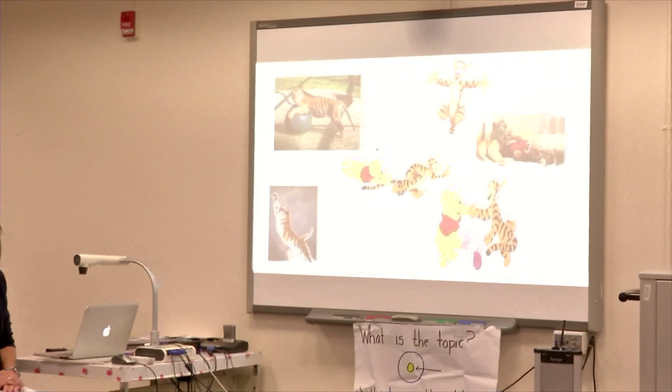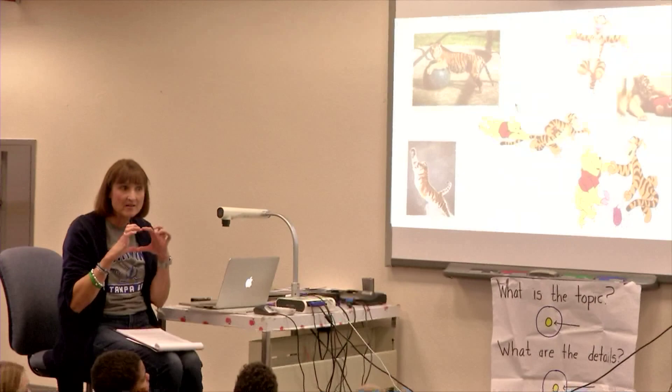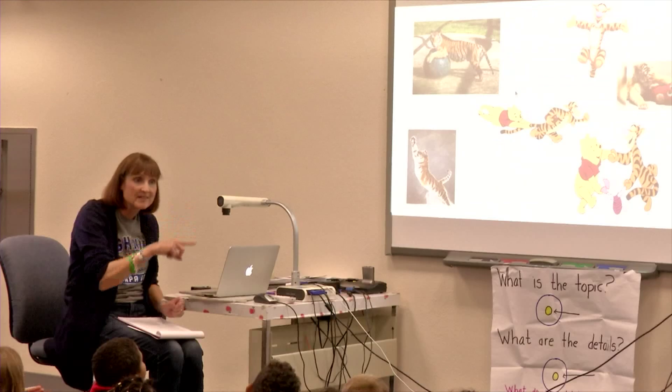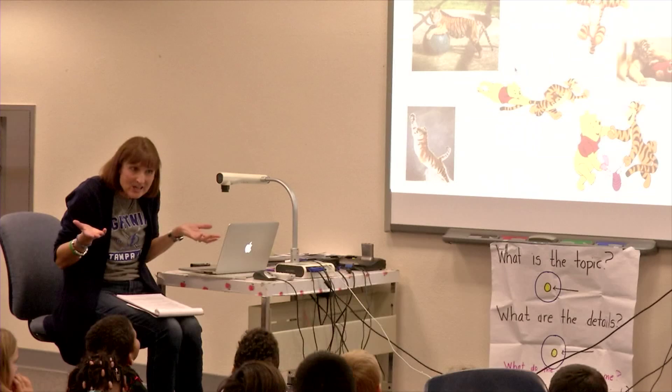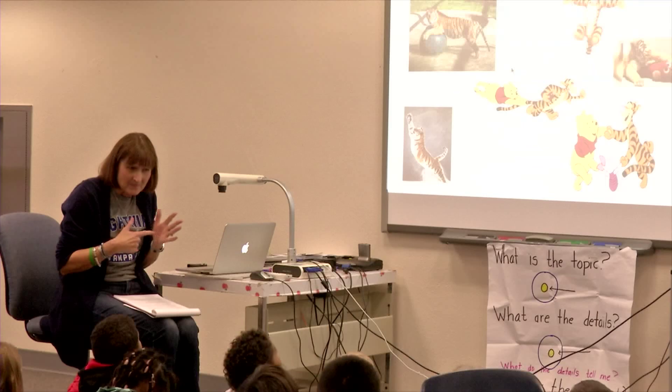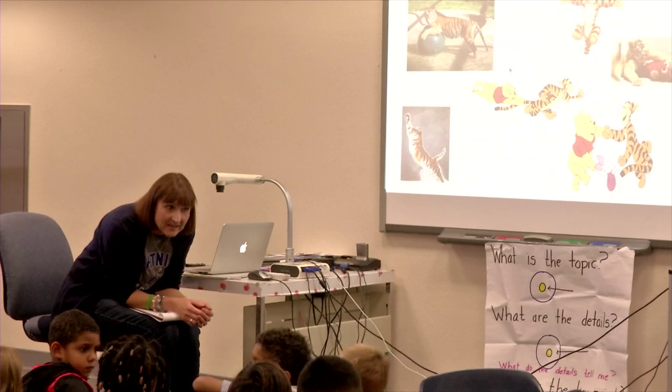Here are tiger pictures. Take a look up there and think in your head — I'll do the gesture and you do the thinking work. Here we go: 'What is the topic?' You've got it — tigers. Look at the pictures. 'What are the details?' What do the details make you think about tigers? 'What is the point?' I'm going to count to three and I want you to turn and talk with your partner — use the gestures if you want — and tell them the topic, the details, and the point. One, two, three.